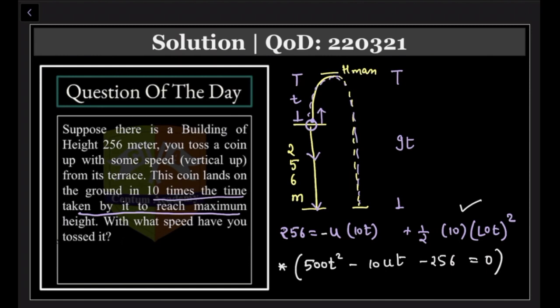You know very well that if you release an object with an initial velocity u, the final velocity will be 0. v equals u plus at, so time taken to reach the maximum height is minus u by g. Can you please put the same over here, u by 10.